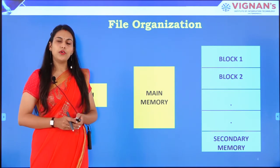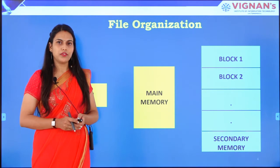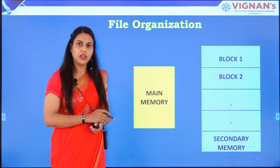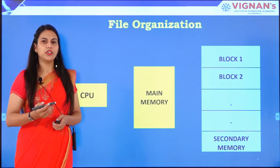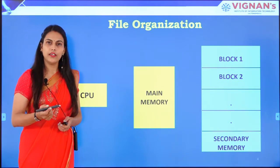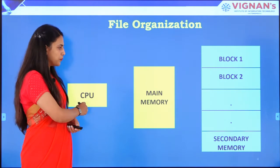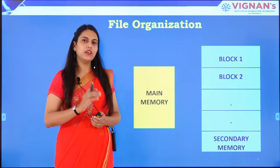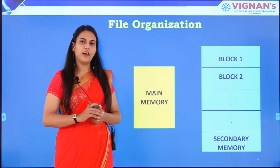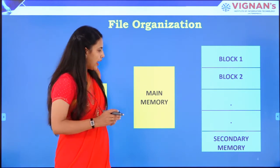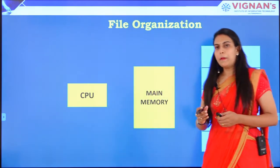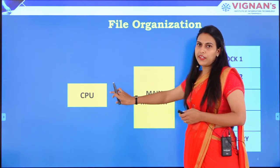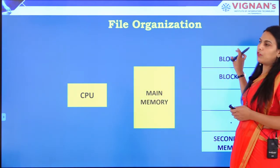First we will discuss how database files are organized in the memory of the computer system. In any computer system, we have CPU, we have main memory and we have secondary memory. CPU is your processor, which is the brain of the computer. Whatever queries you write will be handled by the CPU. Main memory is usually the memory that has high speed of access but very limited capacity. Secondary memory has high capacity but the data accessing speed is very less. This is the reason why main memory and CPU directly communicate with each other, while CPU never communicates with the secondary memory.